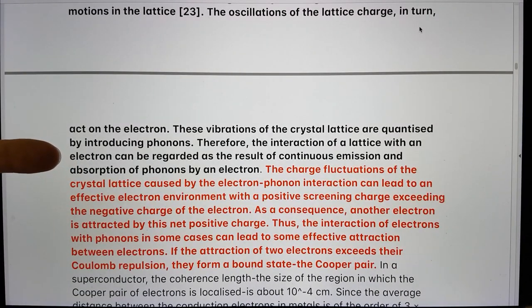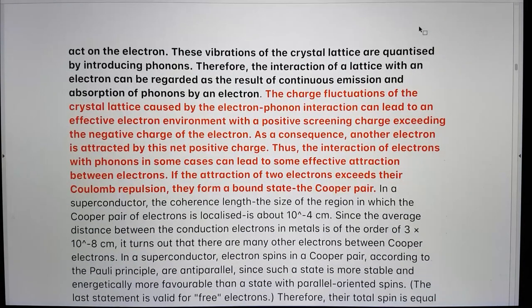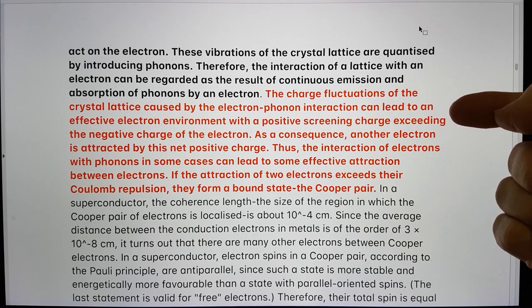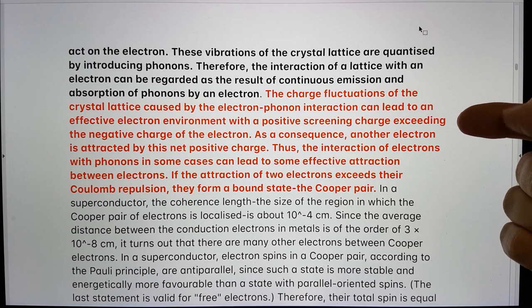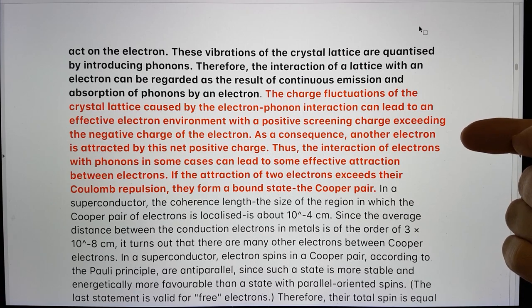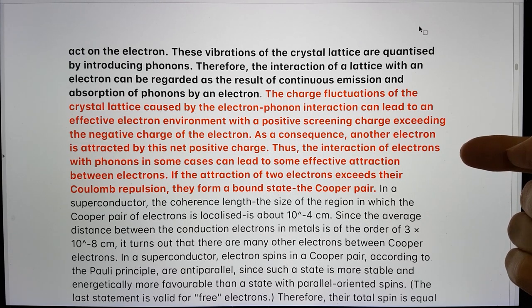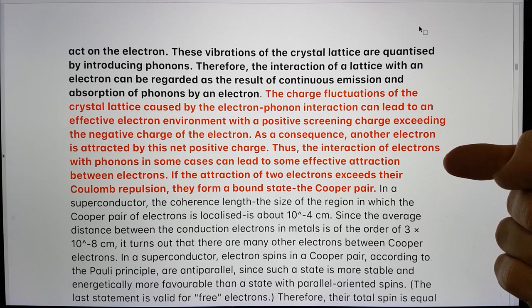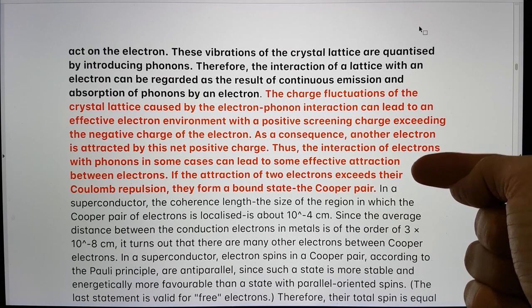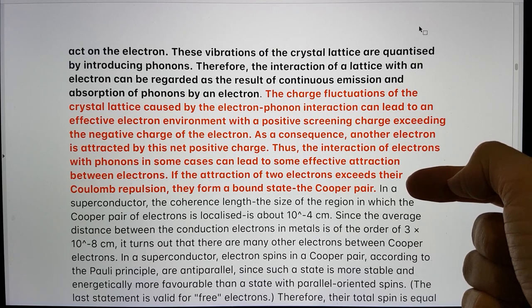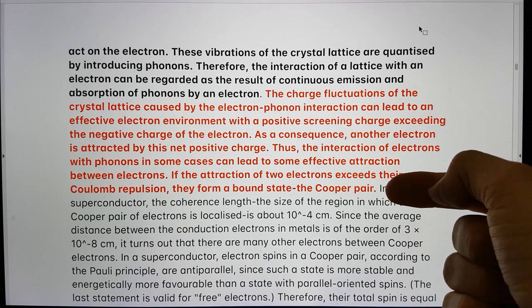Therefore, the interaction of a lattice with an electron can be regarded as the result of a continuous emission and absorption of phonons by an electron. The charge fluctuations of the crystal lattice caused by the electron-phonon interaction can lead to an effective electron environment with a positive screening charge exceeding the negative charge of the electron. As a consequence, another electron is attracted by this net positive charge. Thus, the interaction of electrons with phonons in some cases can lead to some effective attraction between electrons. If the attraction of two electrons exceeds their Coulomb repulsion, they form a bound state, the Cooper pair.